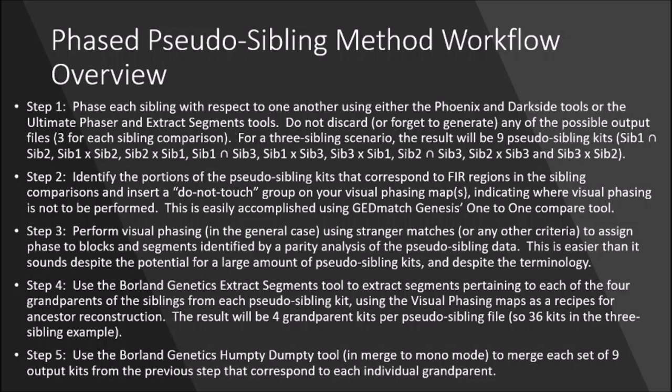Then we're going to do step three. The donor in Australia did most of step three — the visual phasing — so we're just going to transfer it into the format that works for this process. This method is geared to people that have already done their visual phasing. There are entire Facebook groups dedicated to methods of how to do visual phasing, especially for the multiple-sibling scenario. Then we'll go to step four and extract the segments, and step five we'll combine them together and create both parent and grandparent kits.